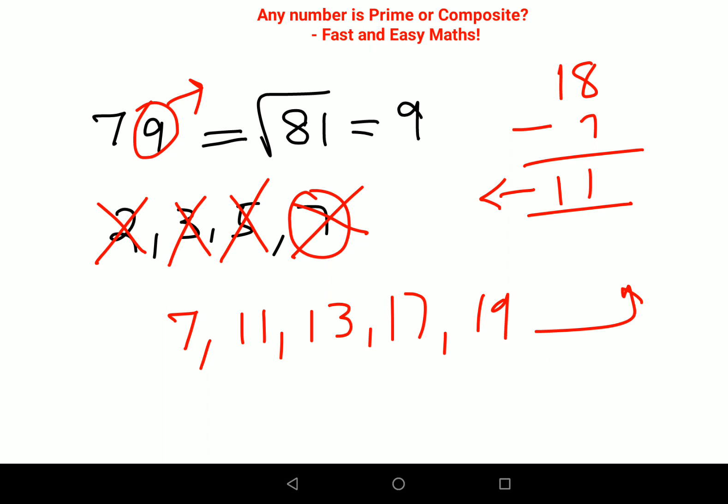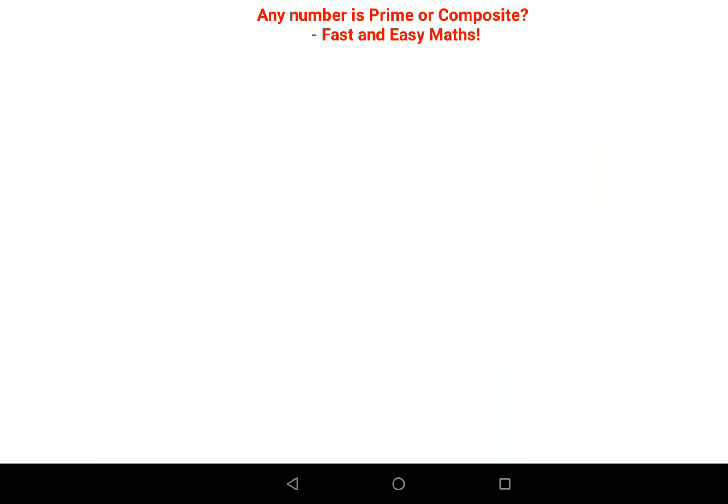I hope you are getting the hang of this. Now very quickly let's look at a bigger number, what about 119? 119 is very close to 121, so basically it's square root is 11. Let's write down every prime number till 11, so 2, 3, 5, 7, and 11.